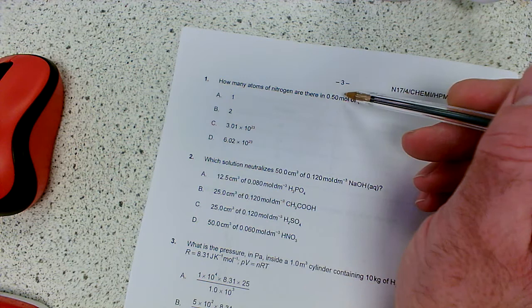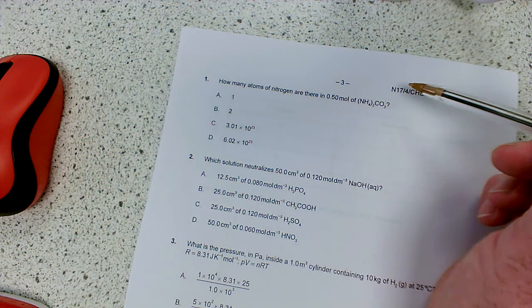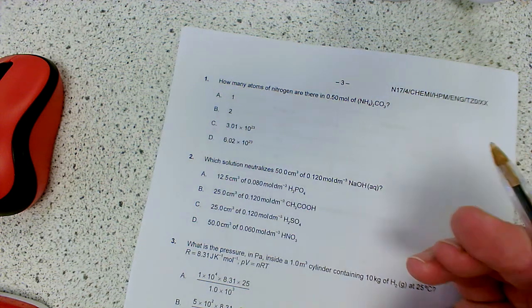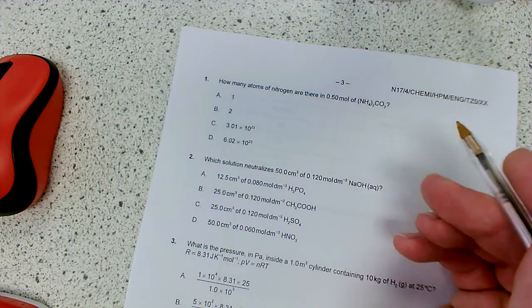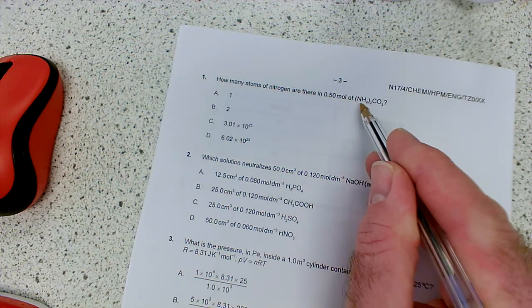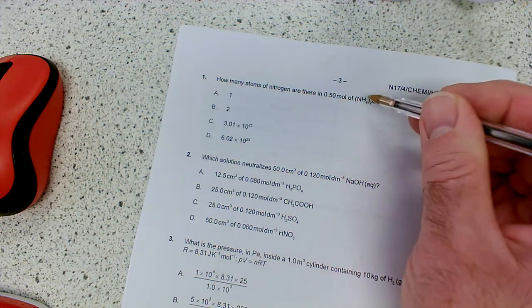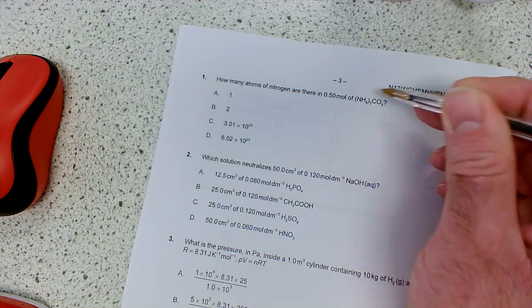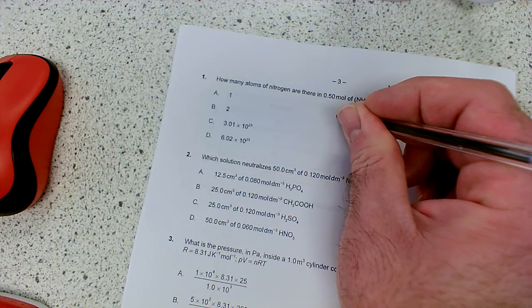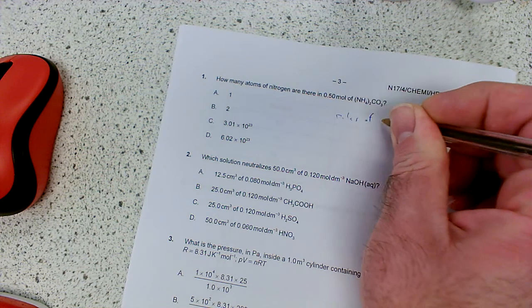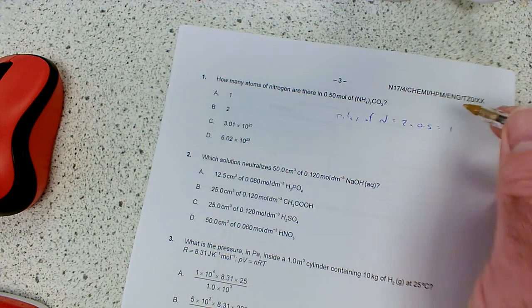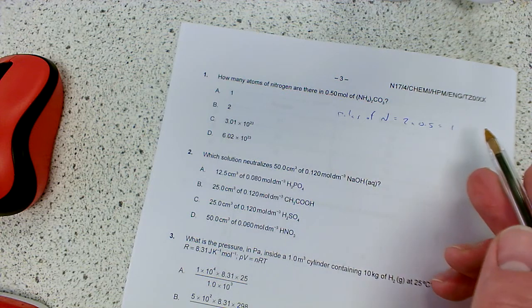How many atoms of nitrogen are there in 0.5 moles of ammonium carbonate? So atoms, so we're going to be needing the Avogadro constant, 6.02 times 10 to the 23. But how many? Now there's 0.5 moles of this stuff, but how many nitrogens are in the formula? There's two of them, because it's NH4 2. So there's two nitrogens. So your moles of nitrogen would be 2 times 0.5, which is 1.